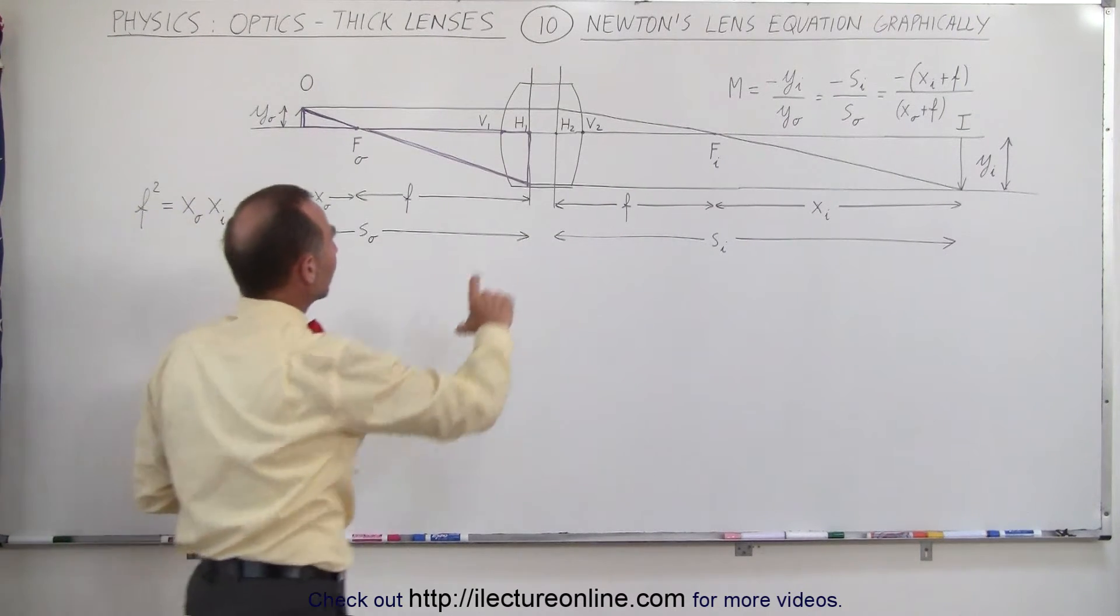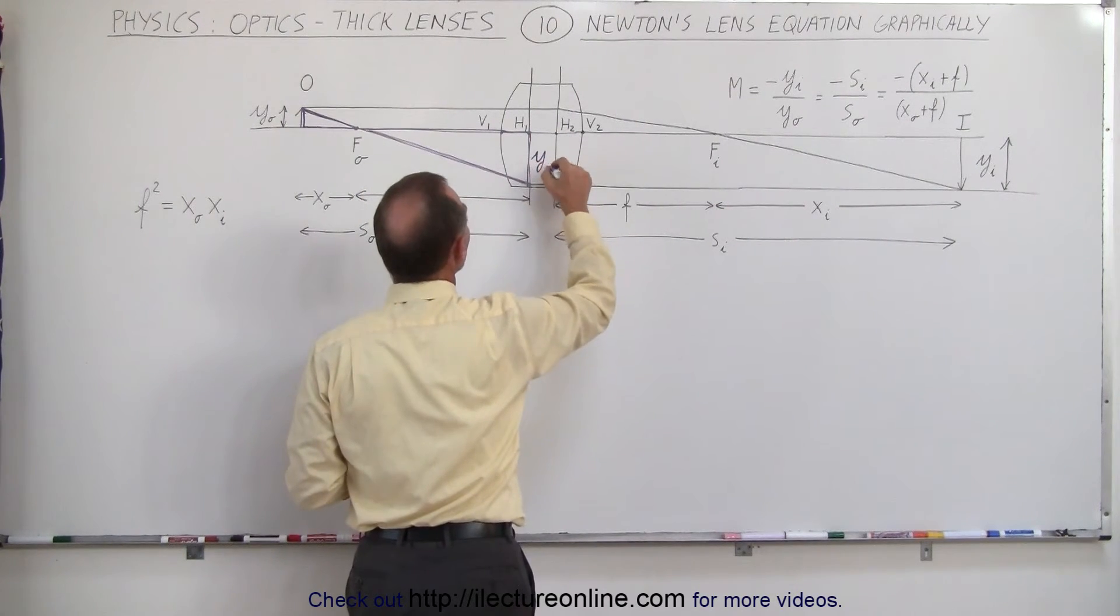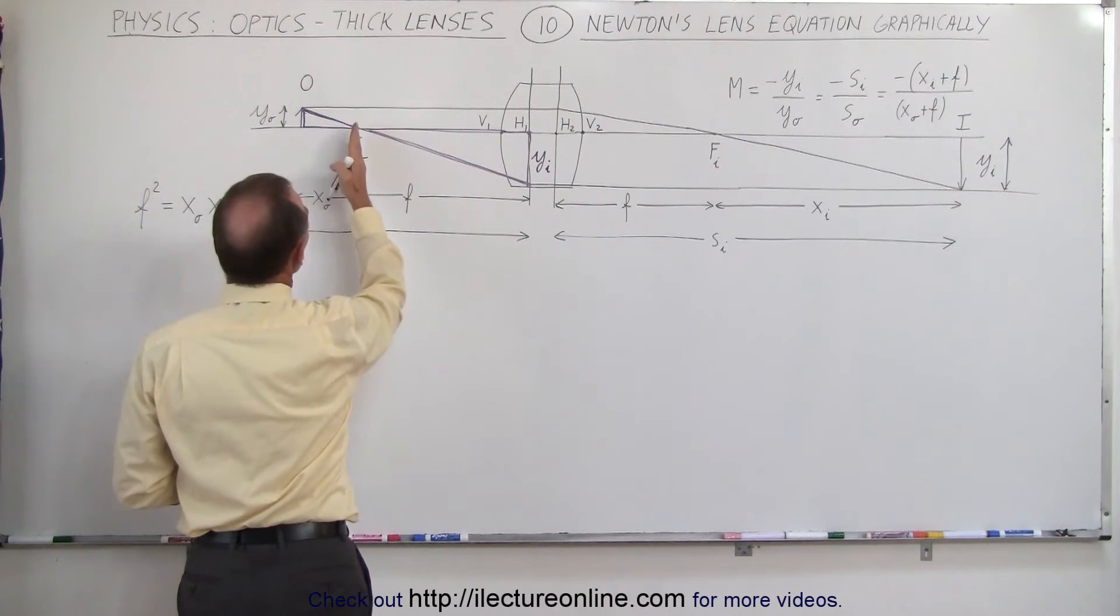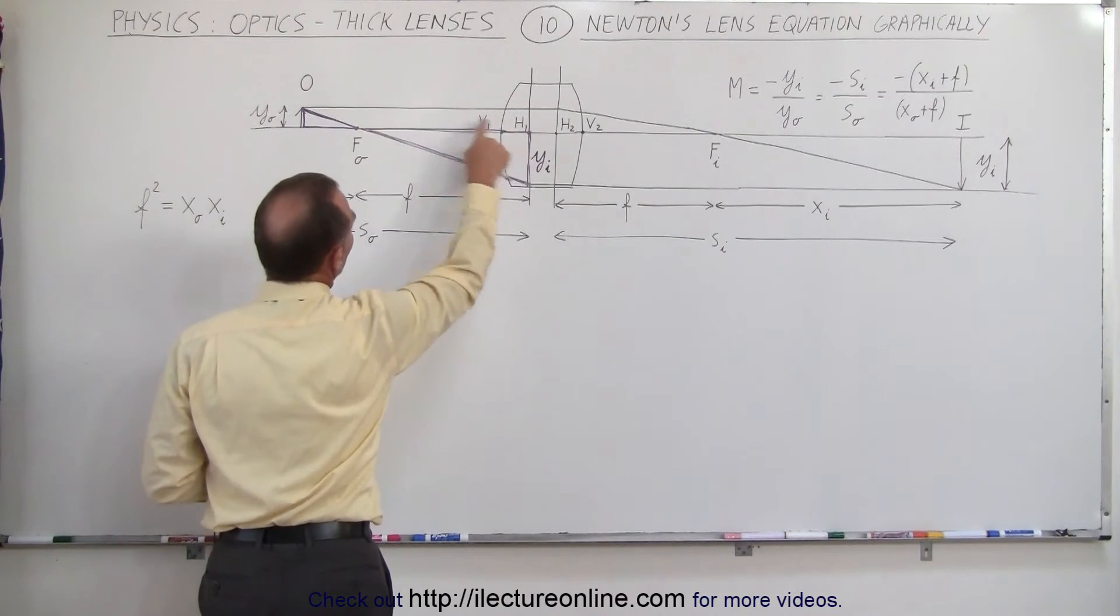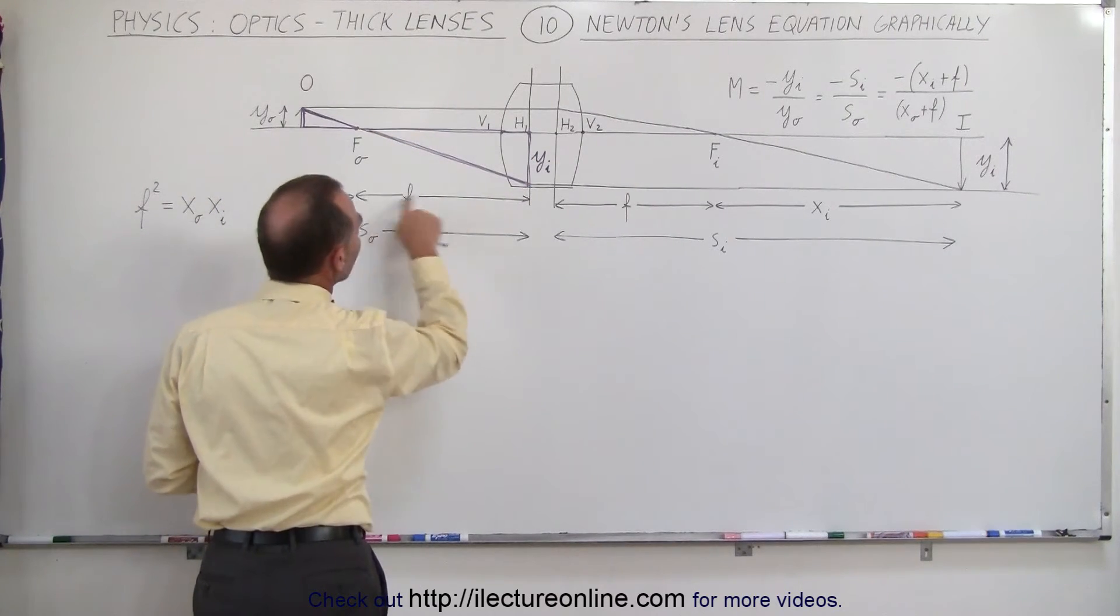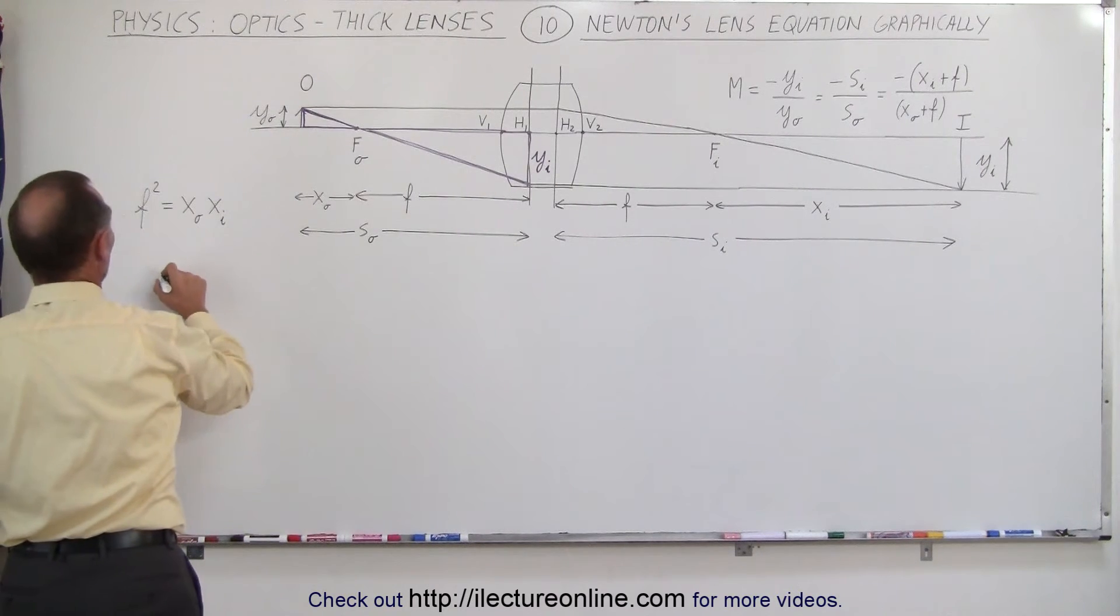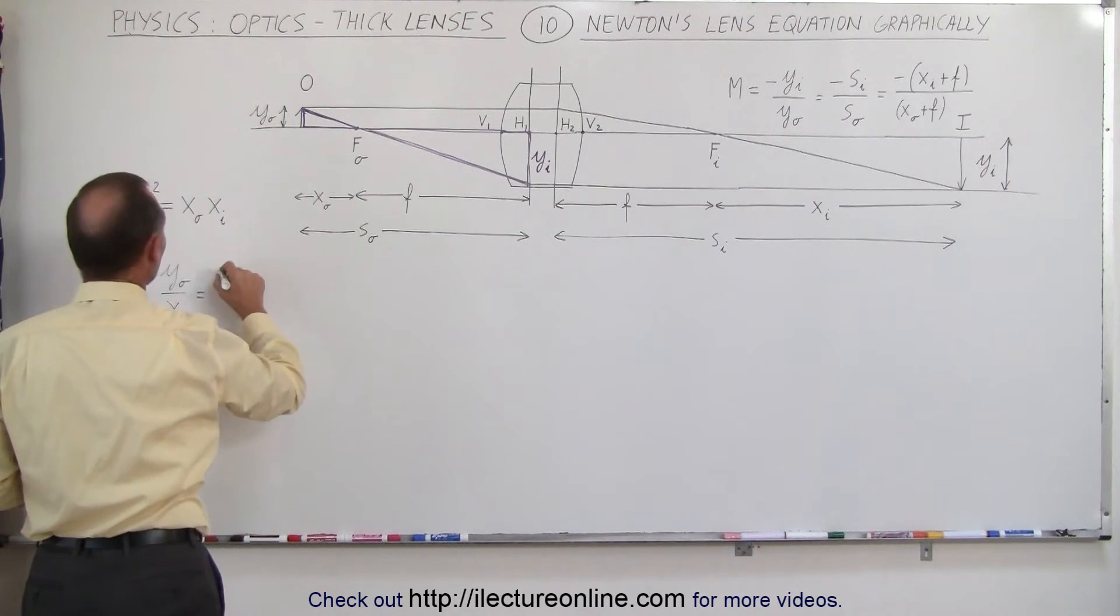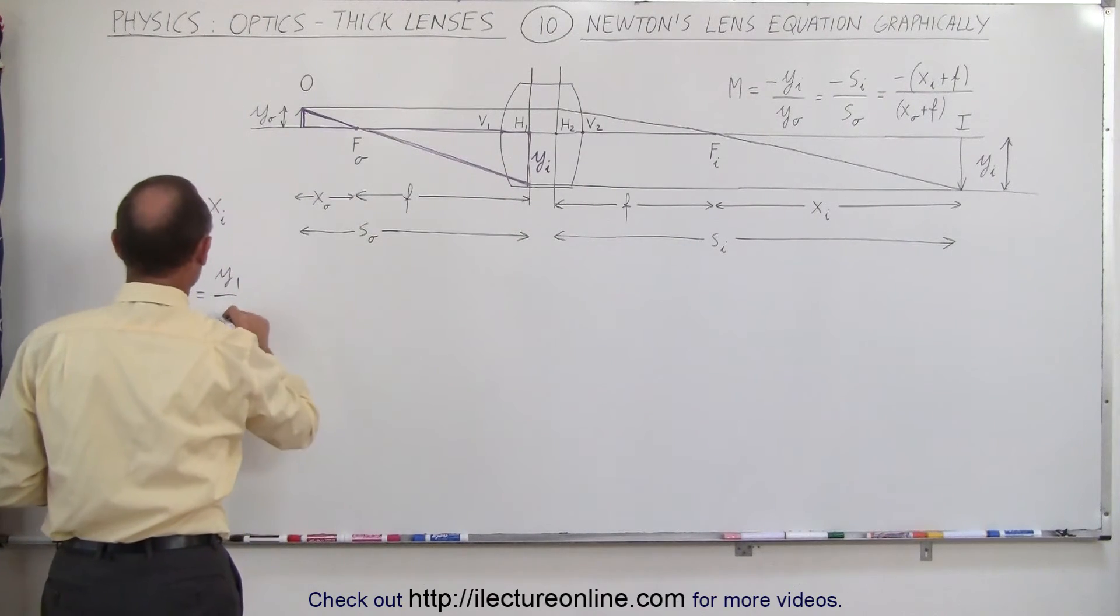And if you realize that this distance here is y sub i, the image height, and this distance here is the object height, and the distance from there to there is x sub O, and the distance from there to there is the focal length, we can then say that the ratio of y sub O divided by x sub O must equal the ratio of y sub i divided by f.